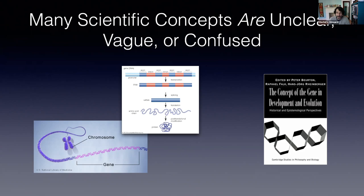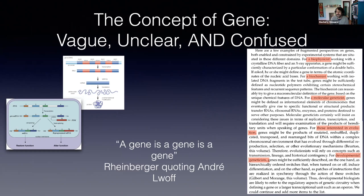It's important to note that it's not simply marginal concepts that have these properties. The concept of gene makes clear we're talking about central concepts for whole research programs — indeed, for one of the two or three most successful research programs in science in the 20th century. The concept of gene is not a failed concept; it was part and parcel of an extraordinarily successful research program. The concept of gene has this interesting property of being vague, unclear, and confused all at the same time.